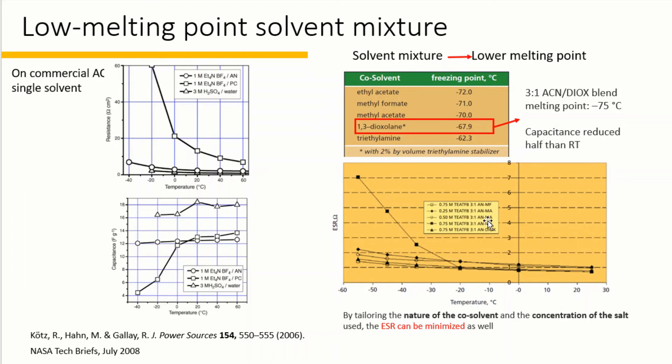Especially for a composition of 3:2:1 acetonitrile/1,3-dioxolane blends, it was found that the electrolyte allows charge and discharge at a temperature as low as negative 75 degrees C, but the capacitance reduced to about half of its room temperature value. By tailoring the nature of the co-solvents and the concentration of the salt used, the resistance can be minimized as well.